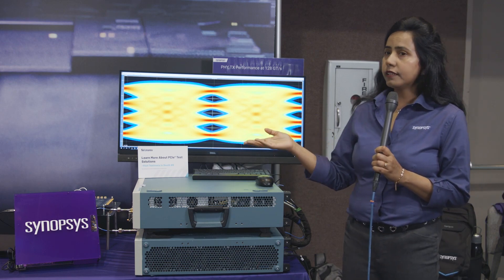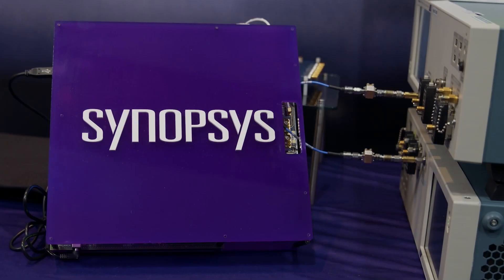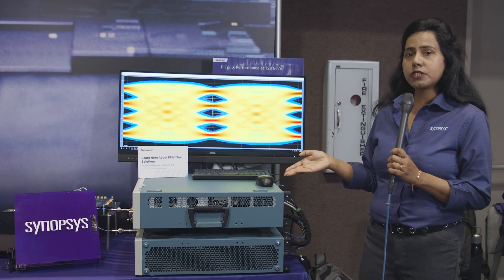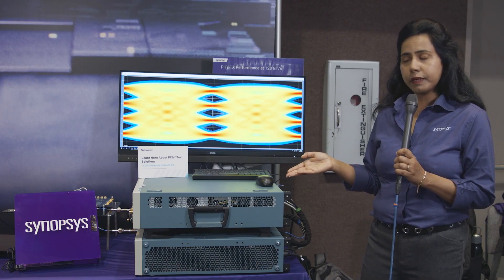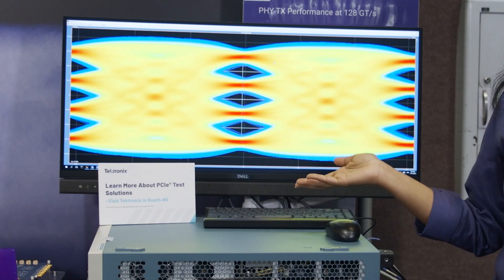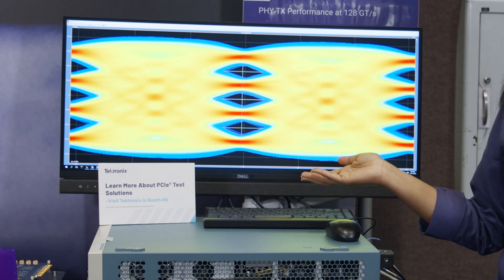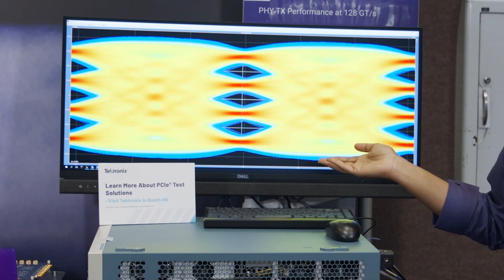As you see, under the purple box our evaluation board is inside that and it's sending PRBS pattern directly to this Tektronix test equipment. Here we are looking at the graphical interface and showcasing the excellent PAM4 eyes.